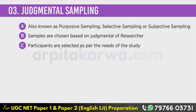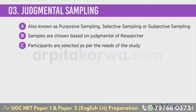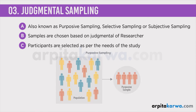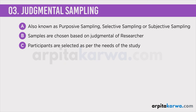In judgmental sampling, the participants selected are according to the needs of the study. All applicants who do not meet the profile are rejected — just like students who will not be attending college are rejected from the sample, and people who are not wearing eyeglasses are rejected from the sample. In judgmental sampling it is the sole decision of the researcher to choose the subjects that will be part of the sample.